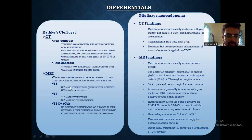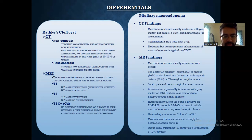Coming to the MRI findings of Rathke's cleft cyst: on T1, 50% are hypointense and 50% are hyperintense. On T2, the majority are hyperintense. On post-contrast, there is no contrast enhancement of the cyst itself. However, a thin enhancing rim of the corresponding compressed pituitary tissue may be evident.